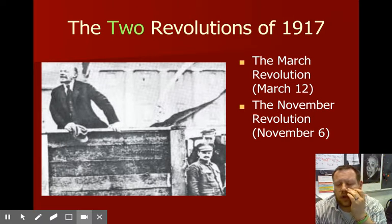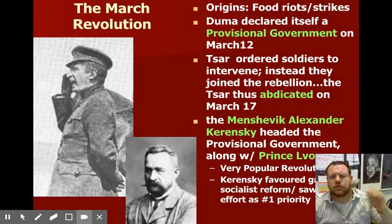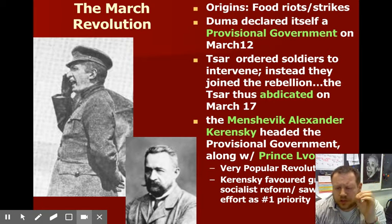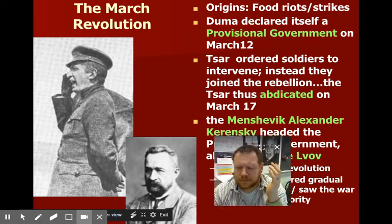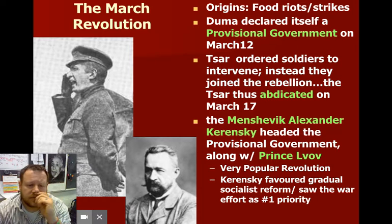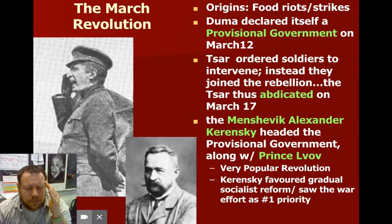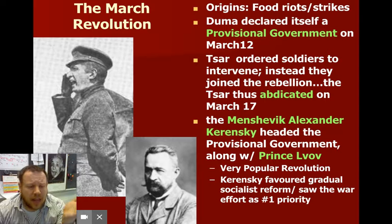1917 rolls around. The Tsar is away at the front, and people are still in uproar. There are two revolutions in Russia — the March Revolution and the November Revolution. The March Revolution was all about the food problem. On March 12th, the Duma declared the Tsar was done and that they were now the ruling power of Russia. The Tsar said no and ordered soldiers to shoot them. The soldiers said no to the Tsar and joined the rebellion. The one thing the Tsar had over the people was the military — and he had now lost that. So he had to abdicate.